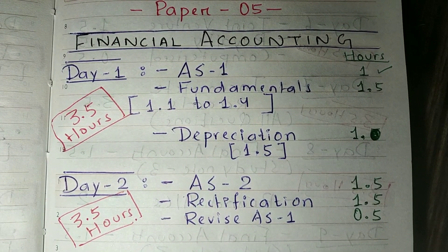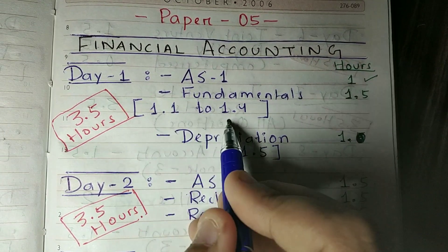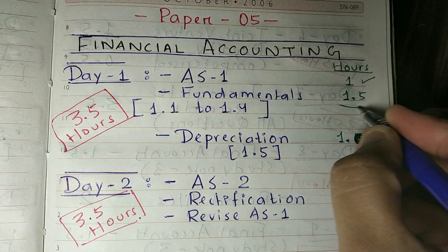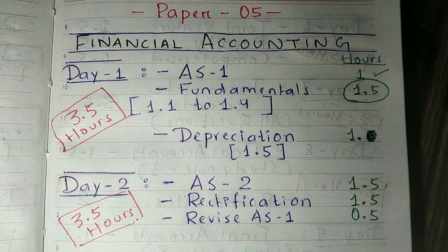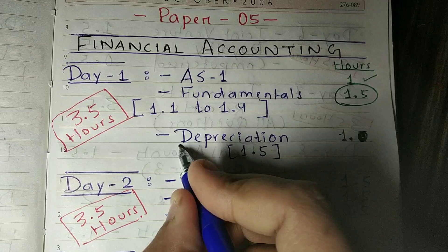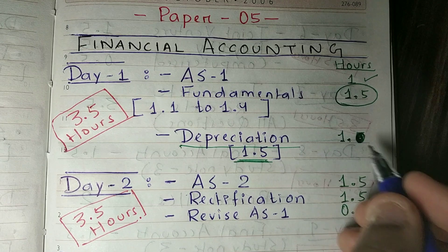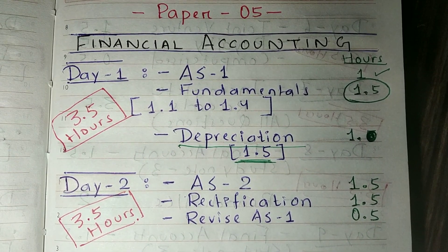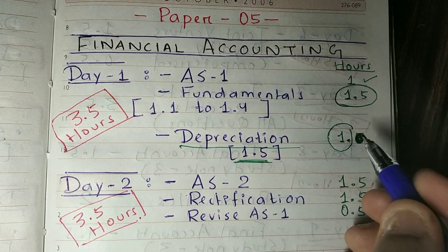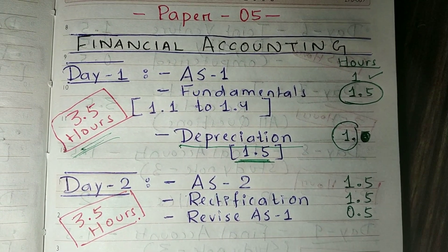In Fundamentals of Accounting, you have to learn theory from sections 1.1 to 1.4. Since you've studied this from childhood, it will be easy — this will take around 1.5 hours. After that, you have to learn Depreciation, which is section 1.5, and that will take more than 1.5 hours. Then there are additional questions to cover, which will take another one hour. So Day 1 will take you around 3.5 hours total.